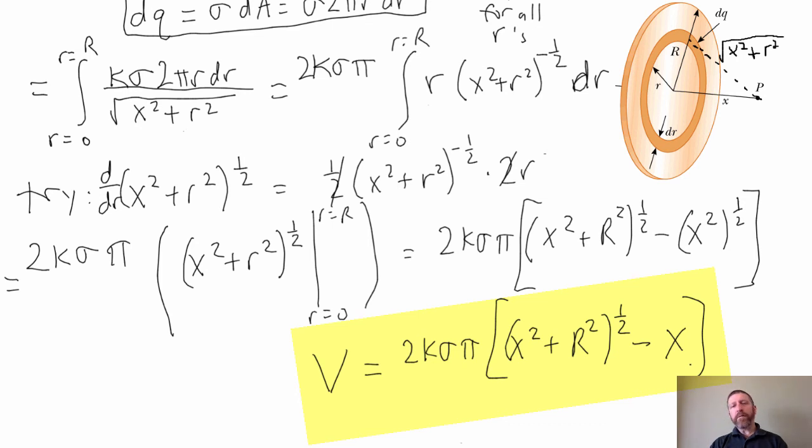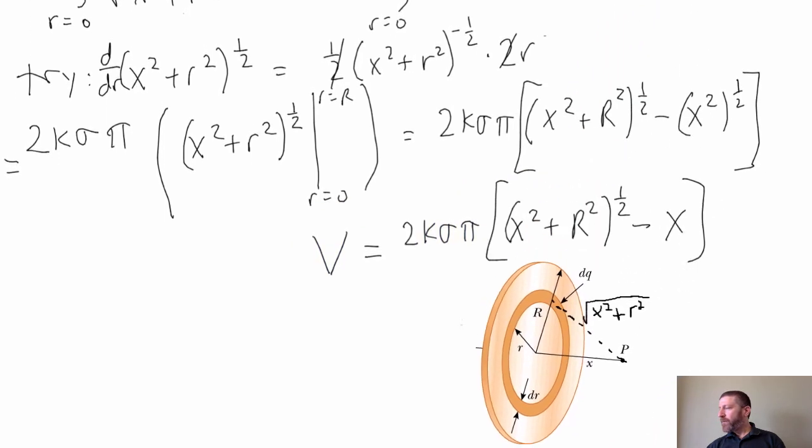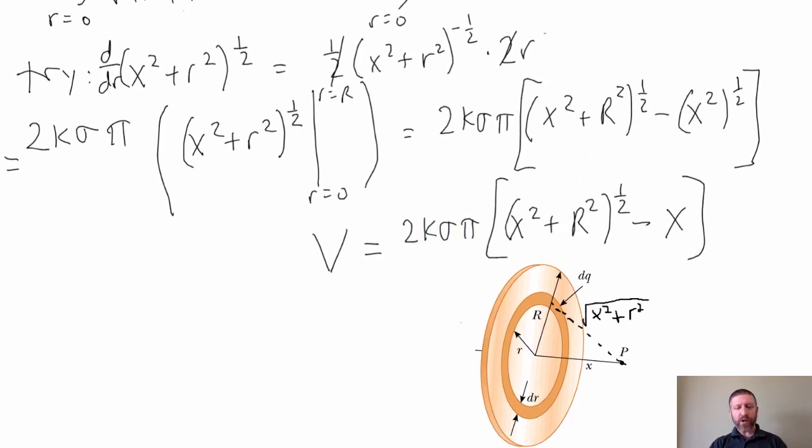Now, that actually is going to make it really, really easy for us to find the field. Because we know the field goes in the X direction by symmetry, let's go ahead and find the field. The electric field in the X direction, that's the only one there will be, is just negative of round V round X. This is a partial derivative. Those are not twos. Those are rounded Ds. It's the partial derivative. So let's go ahead and take the partial derivative of that.